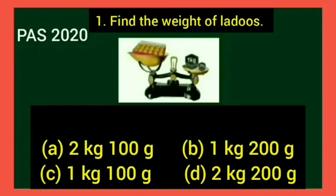Today's pass question: Find the weight of laddus. We have four options — Option a: 2 kilogram 100 grams; Option b: 1 kilogram 200 grams; Option c: 1 kilogram 100 grams; Option d: 2 kilogram 200 grams. Students, look at the picture. At one side of the scale there is a box of laddus and on the other side there are 1 kg and 200 gram weights. So the weight of laddus is 1 kilogram and 200 grams — option b is the correct answer.